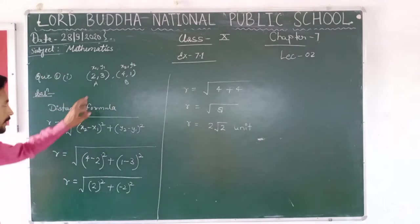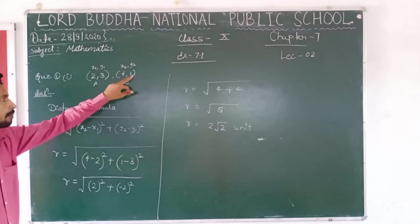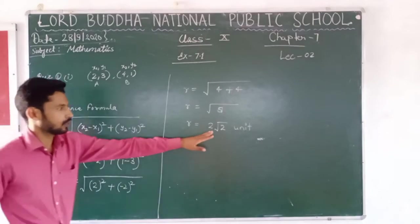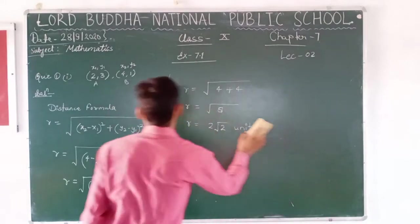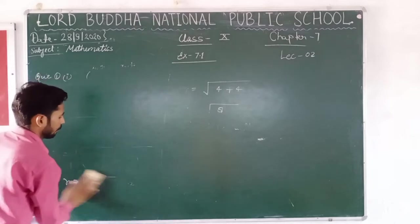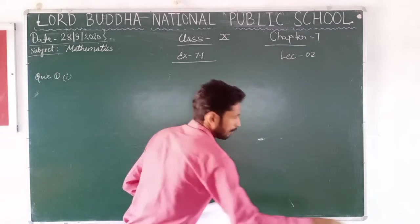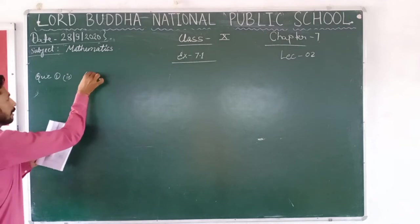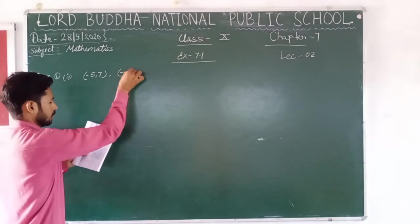So we can say the distance between A and B, whose coordinates are 2 comma 3 for A and 4 comma 1 for B, is 2 root 2 units. Now we will solve the next part of this question. The next part gives the pair: minus 5 comma 7, and minus 1 comma 3.